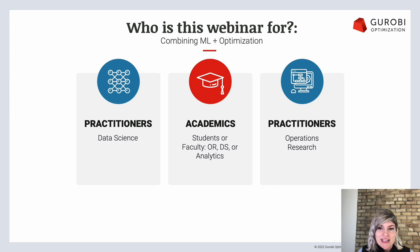I want to quickly touch on the intended audiences for today's webinar. This is a session that's going to cover three approaches to combining machine learning and optimization, and it's not just for data scientists or OR scientists — it's also not just for academic users or practitioners. Each of these audiences can hopefully get something out of the session today.